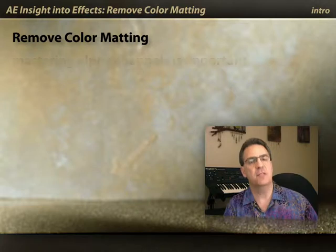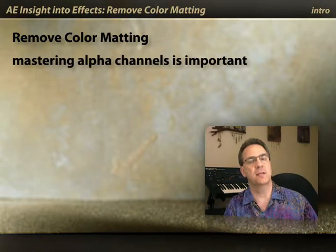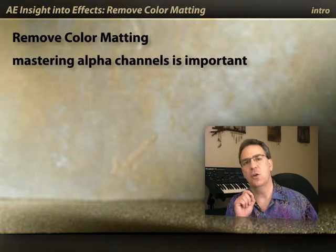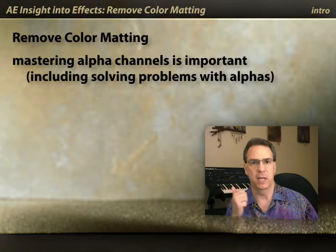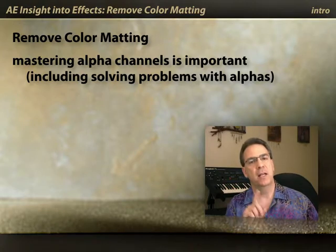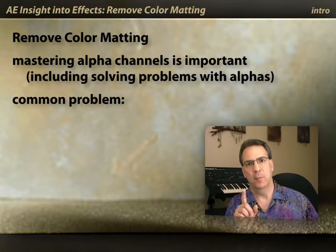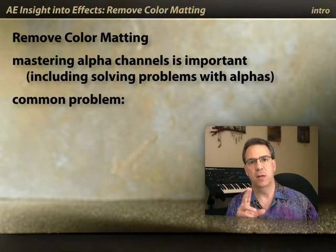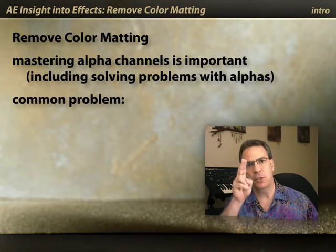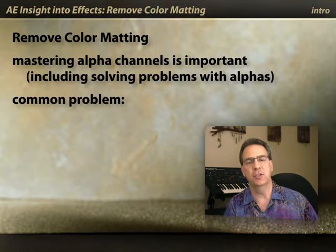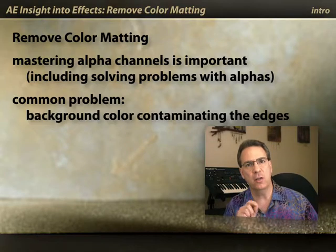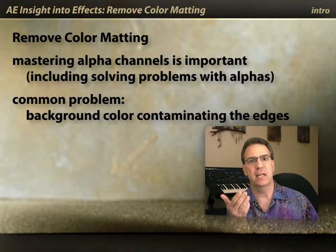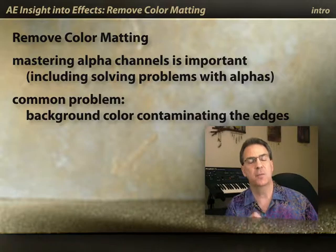A major part of mastering After Effects is mastering the subject of alpha channels — in particular, knowing how to solve problems with alphas when they come up. One common problem is if you have an object with an anti-aliased or partially transparent edge and part of the background color from behind that object has crept into that edge.